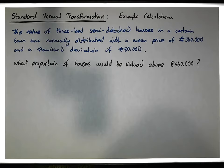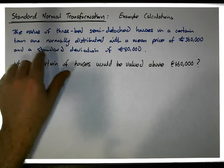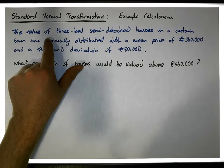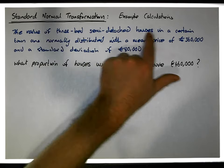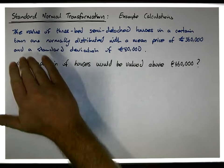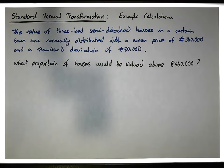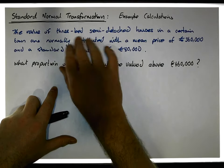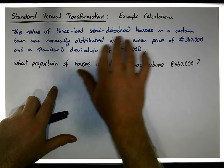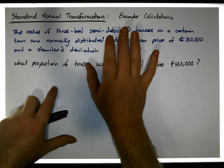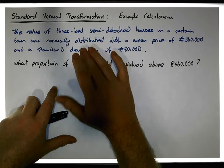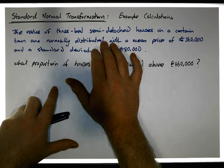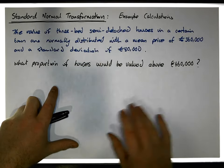We've been dealing with these scenarios up to this stage. The problem goes like this: the value of three-bedroom semi-detached houses in a certain town are known to be normally distributed. So we know the prices of these houses are normally distributed, which means all the theory about bell-shaped curves, normal curves, and standard normal curves applies.